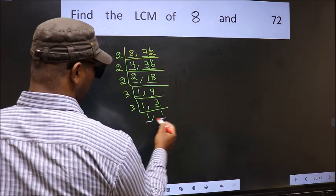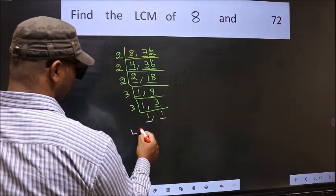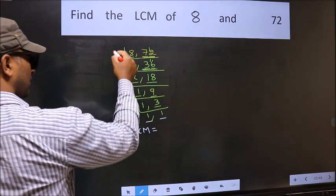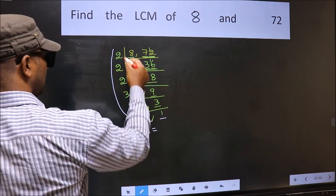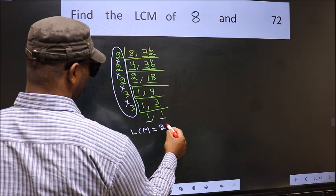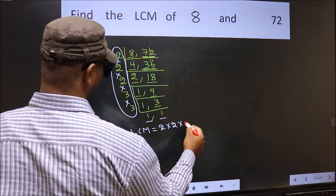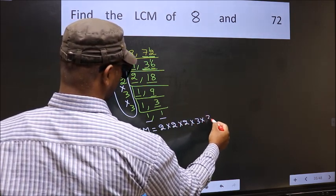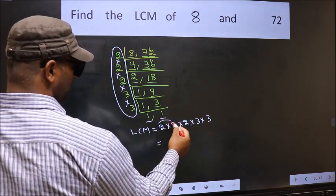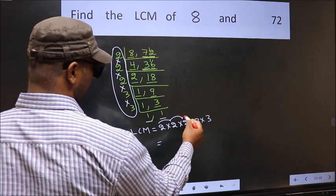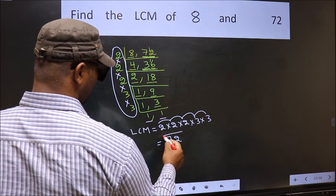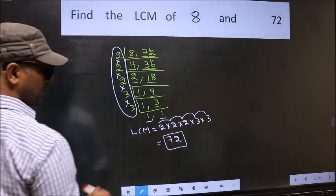So we got 1 in both the places. So our LCM is the product of these numbers — that is 2 into 2 into 2 into 2 into 2 into 3 into 3. Let us multiply: 2 into 2 is 4, into 2 is 8, into 3 is 24, into 3 is 72. So 72 is our LCM.